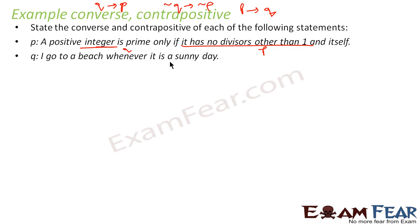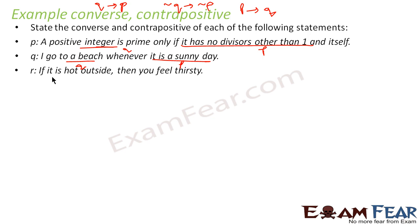To find the contrapositive: if the positive number is not prime, then it is not without divisors other than 1 and itself. Similarly, 'I go to beach whenever it is sunny' means: if it is sunny (P), I go to beach (Q). The converse is: if I go to beach, it is sunny. The contrapositive is: if I do not go to beach, it is not sunny. Another example: if it is hot outside, then you will feel thirsty. The converse is: if you feel thirsty, it is hot outside. The contrapositive is: if you don't feel thirsty, it is not hot outside.